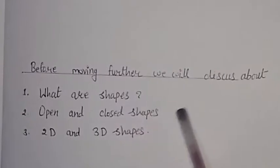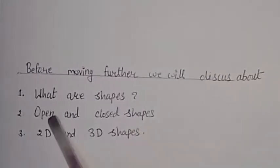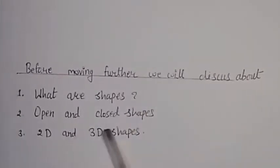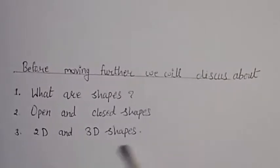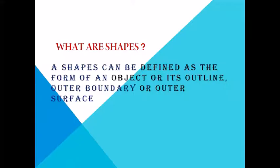Before moving further, we will discuss about what are shapes, open and closed shapes, and 2D and 3D shapes. So, let's first ask, what are shapes? A shape can be defined as the form of an object or its outline, outer boundary or outer surface.